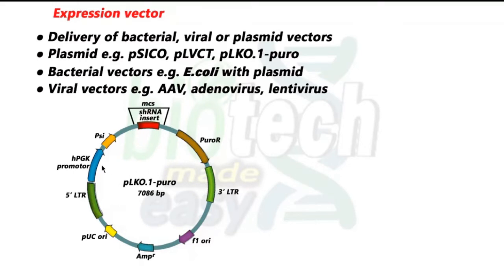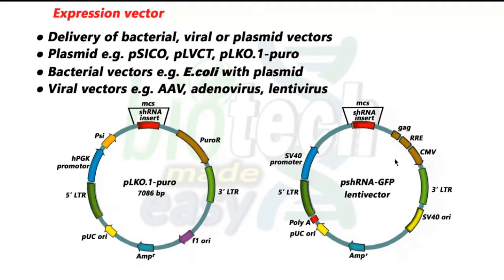It also has long terminal repeats shown as 5'LTR and 3'LTR. H is for human — human PGK promoter and psi DNA packaging signal can also be seen in the figure. Another vector shown here is PSH-RNA GFP lentivirus, which also has two ORI sequences from pUC and SV40, along with 5'LTR and 3'LTRs. Marker genes include ampicillin resistance and puromycin resistance genes, as well as an SV40 promoter and many other sequences.